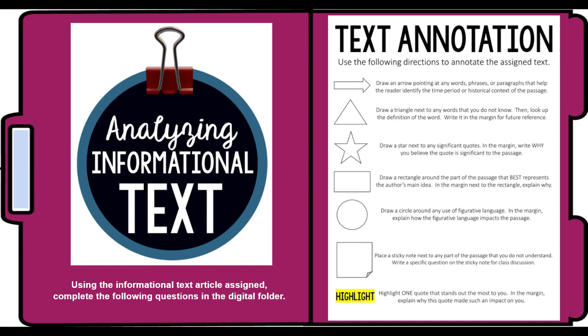Then you're going to draw a rectangle around the part of the passage that best represents the author's main idea. In the margin next to the rectangle, explain why. If you remember the things we talked about when going into summaries, having these is a great way to figure out exactly what you need to summarize for your topic sentence or main paragraph, so you don't have to worry about rereading the passage to find that information.